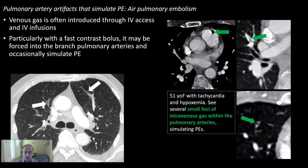Shifting to other things that mimic filling defects: here we have a patient with air entrained into their intravenous tubing before contrast injection. You can see air bubbles in the main pulmonary artery and distal pulmonary arteries. On pulmonary artery windowing you might not notice these air bubbles and could mistake them for pulmonary emboli, but on lung windows you can actually see the air. If you see air in the main pulmonary artery, consider it as a possible artifact.